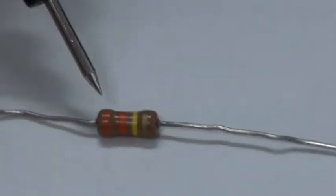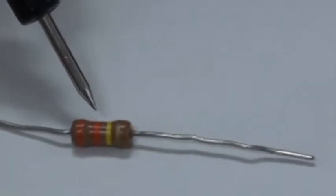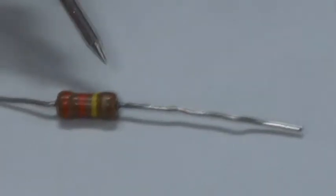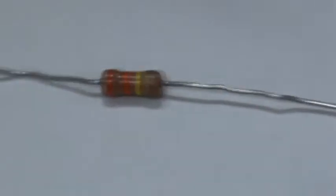Let's take a look at these resistors. This one has four bands: orange, orange, yellow, and silver.